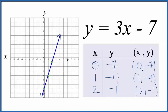You could also use slope intercept formula to graph y equals 3x minus 7. There's a link at the end of this video to help you with that.